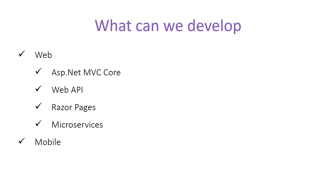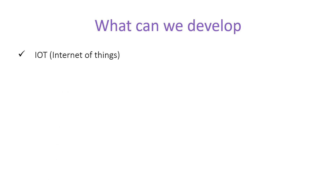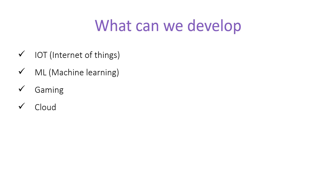Using .NET Core framework, we can develop mobile applications, console applications, and desktop applications. The development of desktop applications is possible in .NET Core version 3.0 and later. .NET Core can also be used for the development of Internet of Things, machine learning, gaming applications, and cloud applications. As you can see, .NET Core is a huge framework which is used for the development of several types of applications.